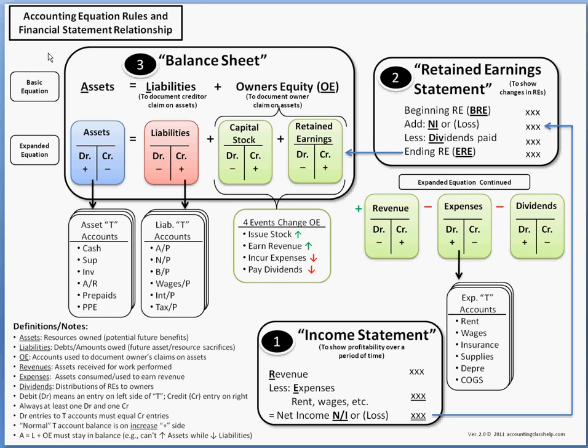What we have here is basically a one-page reference sheet to help us remember and recall all those debit and credit rules, the financial statements, how the financial statements are interrelated, and so forth. We're going to want to print this thing out and keep it in front of us — it'll really help as you're doing all those accounting textbook problems and answering questions in class.